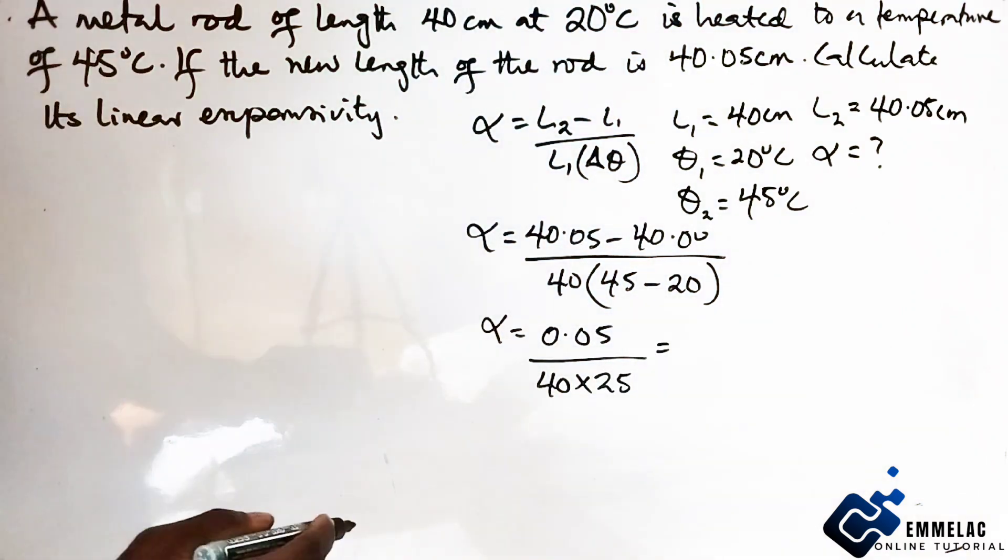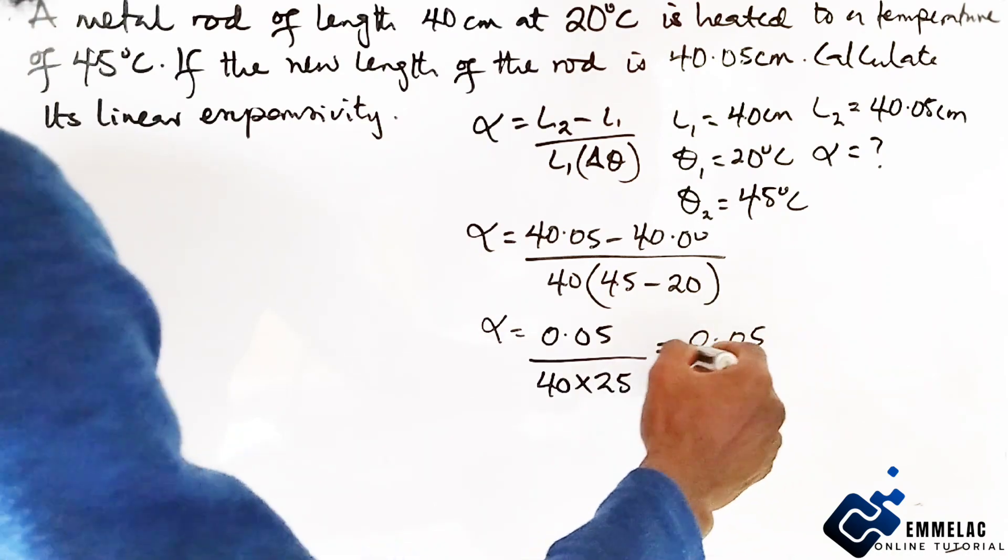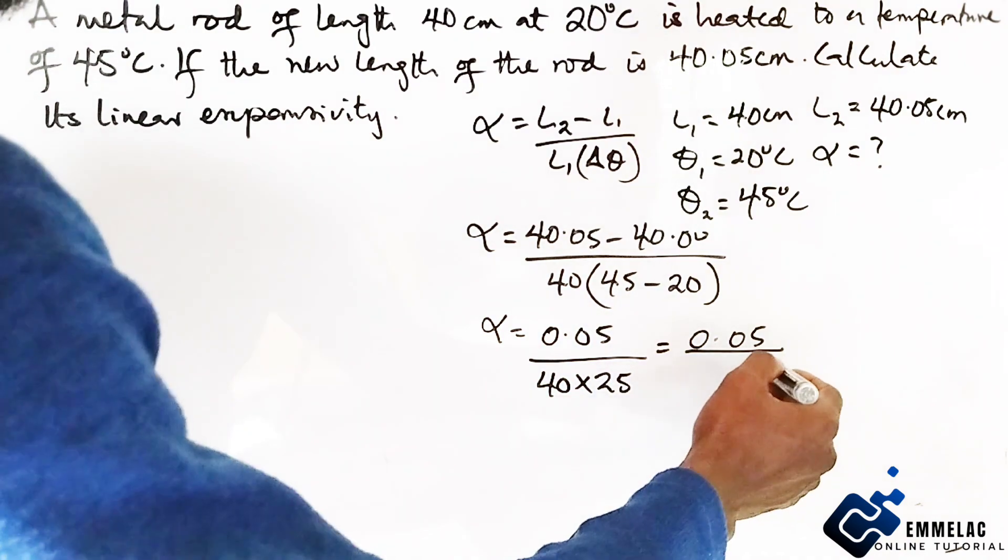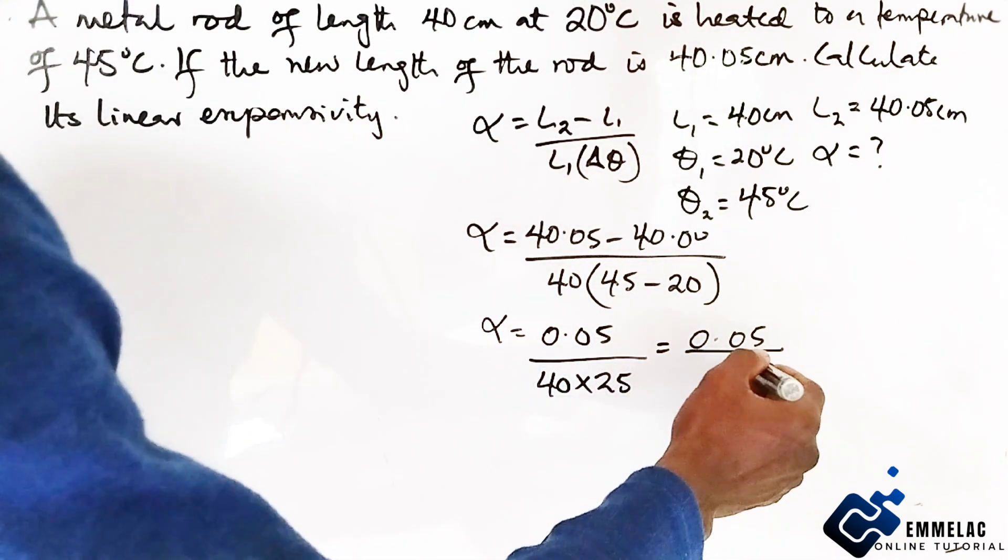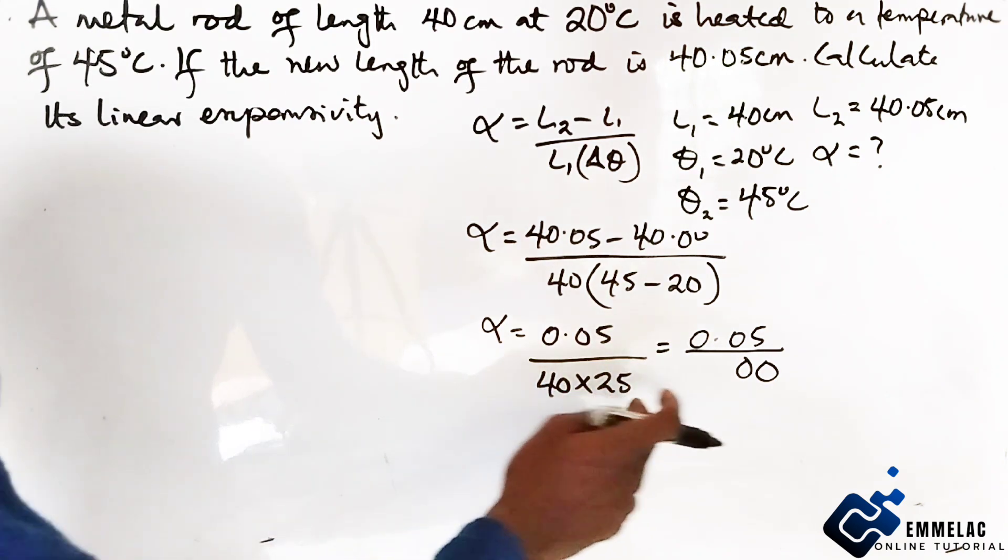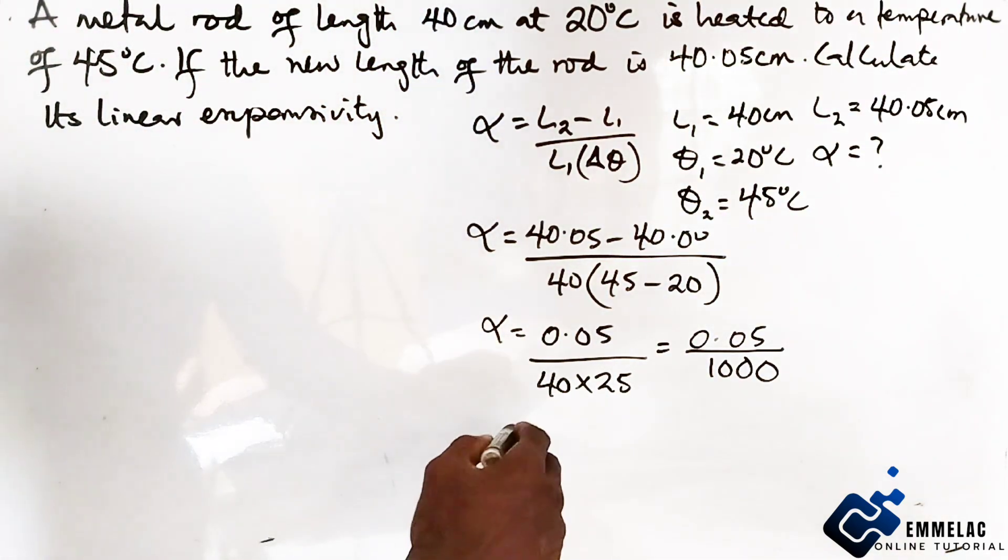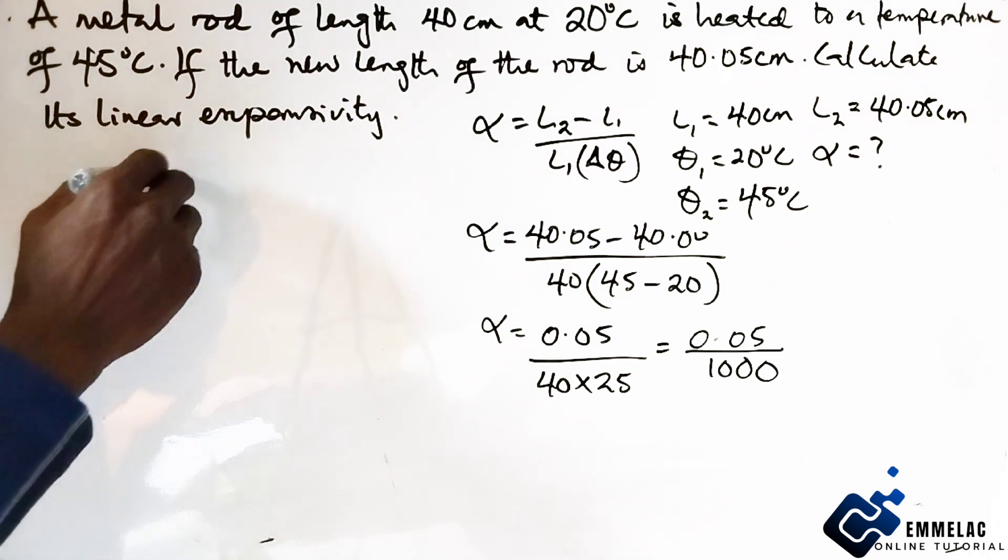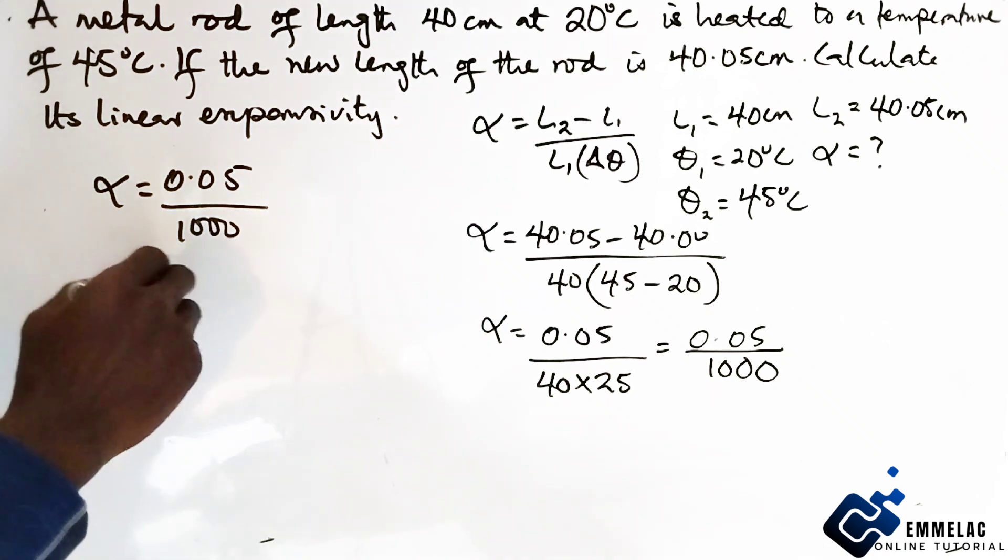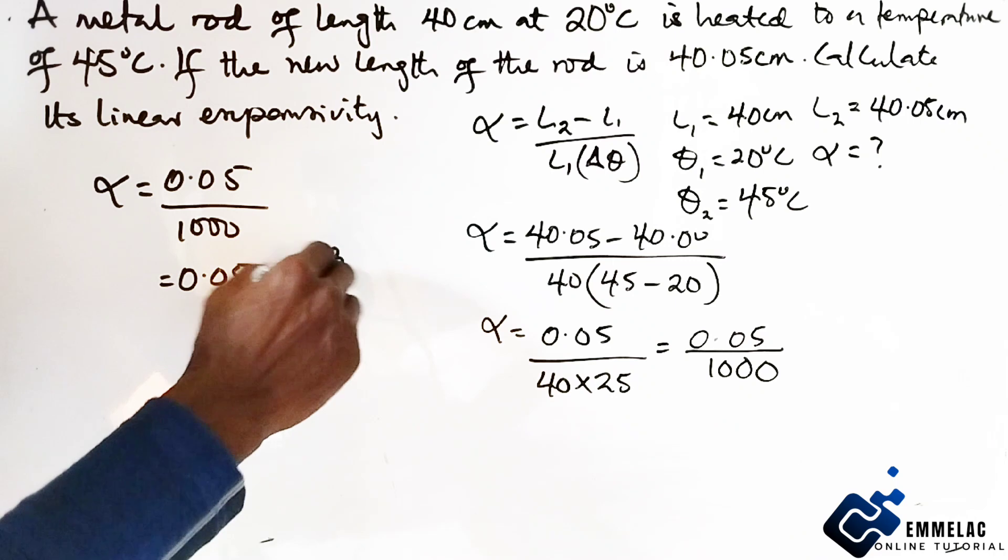This minus this should give us, that will be 0.05, then over 40 times 25. And this further should give us 0.05 over, now here, 4 times 5 here. Let us put our 0 here. Now 4 times 5 is 20. You write 0.02, 4 times 2 is 8 plus 1, 10.